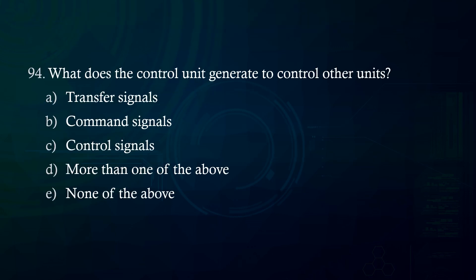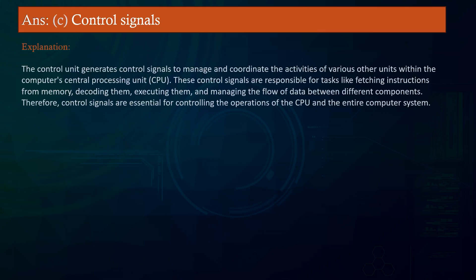What does the control unit generate to control other units? A. Transfer signals. B. Command signals. C. Control signals. D. More than one of the above. E. None of the above. Answer: Control signals. Explanation: The control unit generates control signals to manage and coordinate the activities of various units within the CPU. These signals are responsible for fetching instructions from memory, decoding them, executing them, and managing data flow between components.